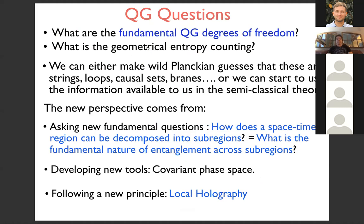One of the fundamental questions I want to focus on in quantum gravity is: what are the fundamental degrees of freedom? Another way to ask is: what is this geometrical entropy accounting — what kind of states? There are really two strategies. One, applied for the past 30 years, is to make bold guesses about the Planckian nature of these degrees of freedom — strings, loops, causal sets, branes, and so on. Or another strategy is to use the information available in the semi-classical theory to better understand what these degrees of freedom should look like.